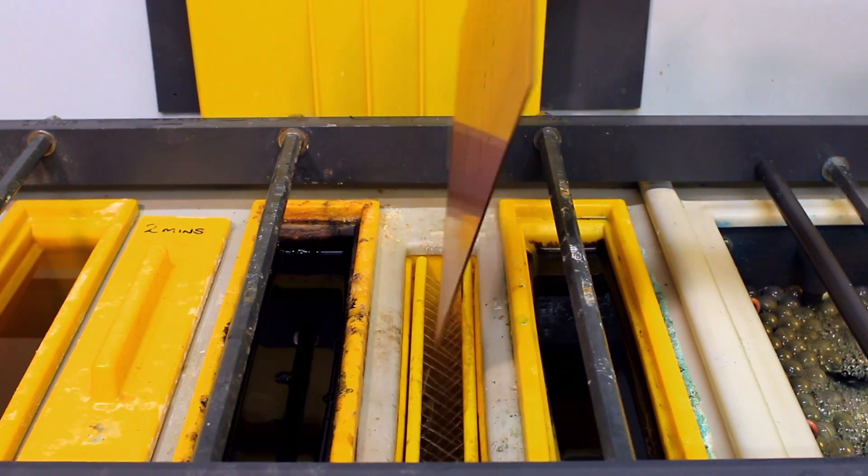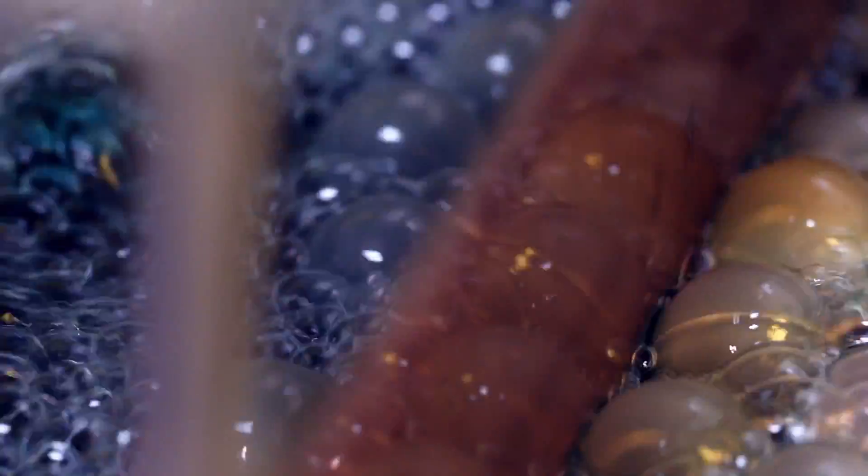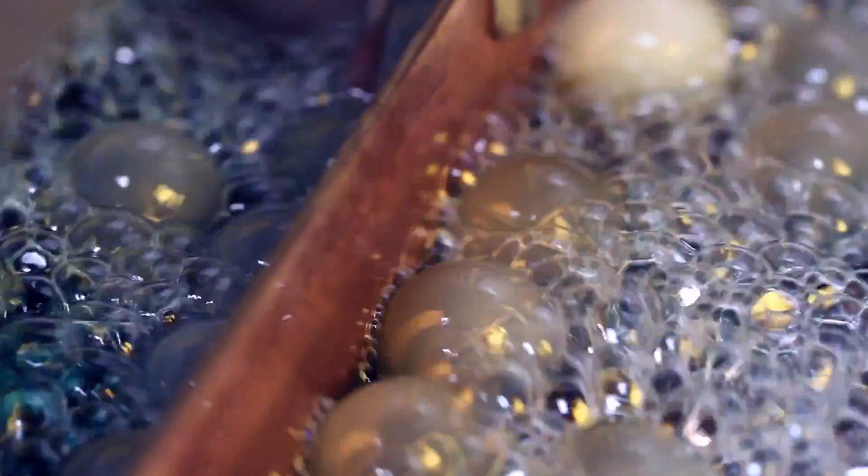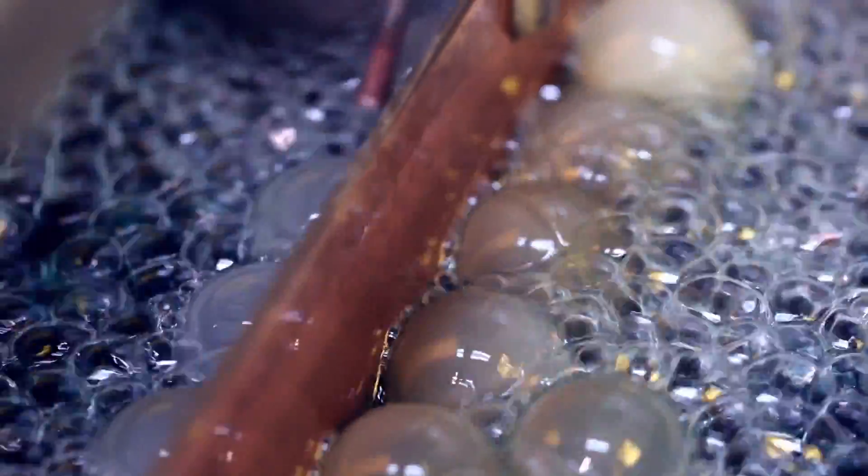The board is now immersed in the electroplating bath where copper is deposited onto the fiberglass coated with palladium. The floating plastic balls help to reduce the amount of evaporation from the electrolyte. The inside of the holes are now coated with copper providing electrical contact through the hole.